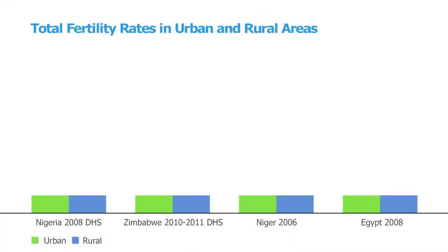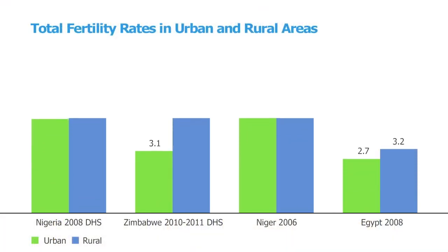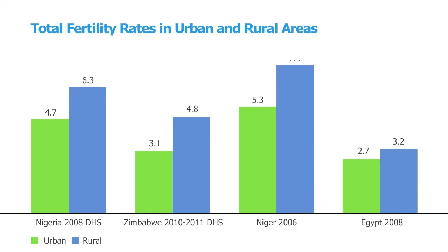Finally, urban and rural differences can be quite important demographically for population growth. This final chart shows the great difference in the average number of children women bear during their lifetime — the total fertility rate — at today's rates. We can see some pretty significant differences between urban and rural areas across all of these countries.